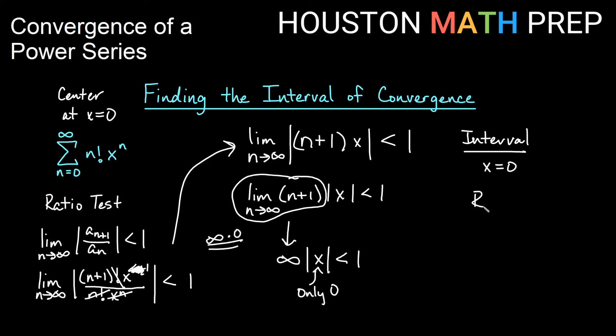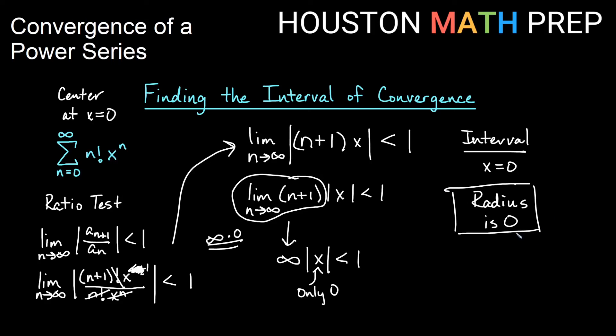How far out can I go from the center and still converge? Since the series only converges at one point, the radius of convergence is 0. I can't go any distance from x equals 0 and still have convergence.